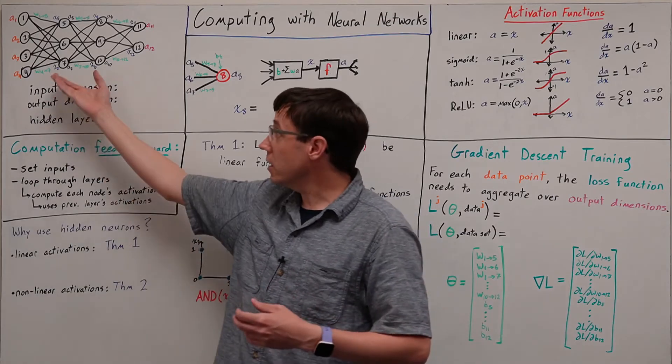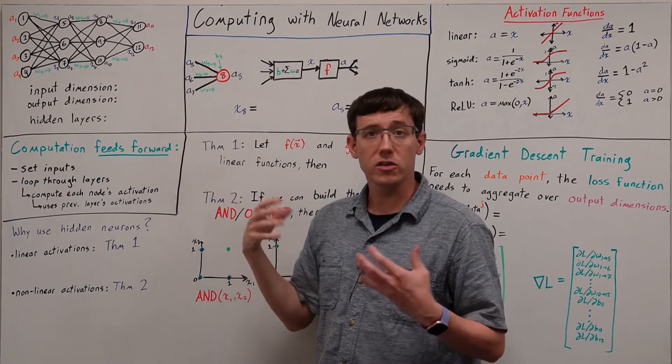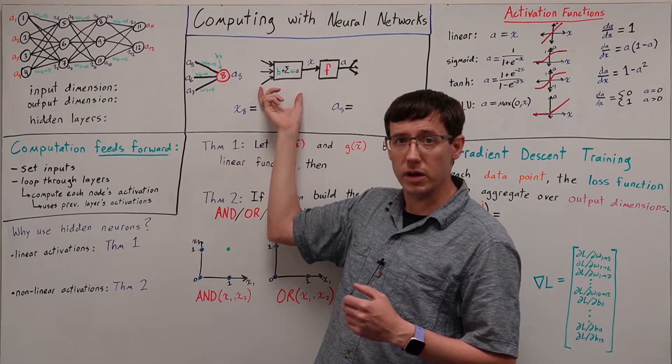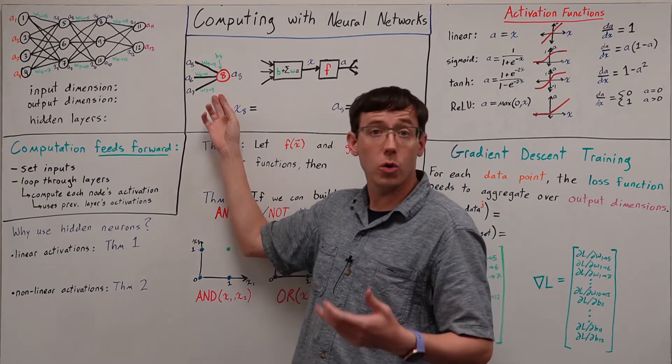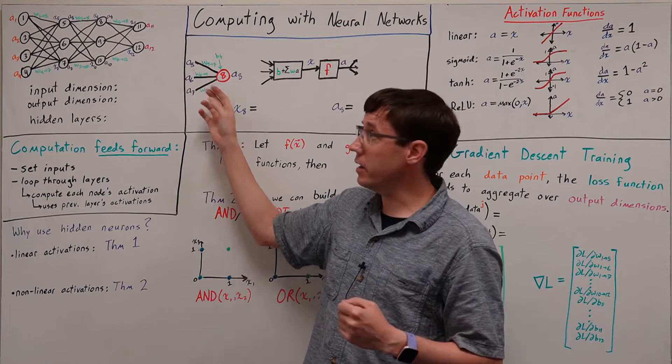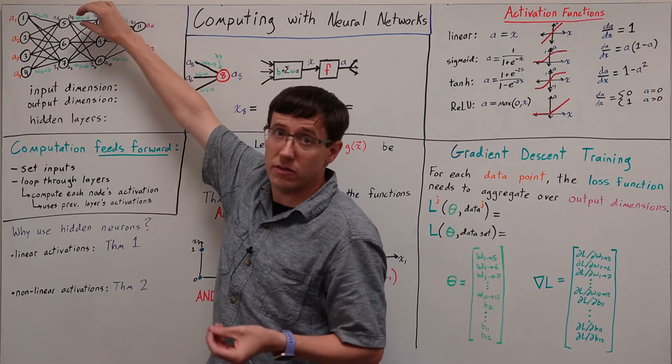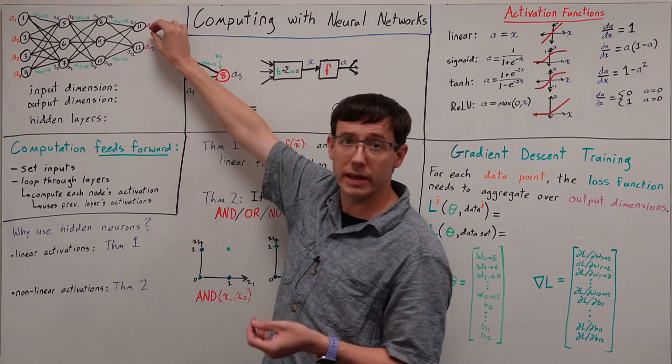Every node in a neural net performs the same computation we've seen before, which we can split into two stages: taking the weighted sum of inputs and applying an activation function. Only now, a neuron's input can come from previous neurons' activations, and the activation it computes can be passed along as input to later nodes.